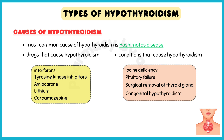The most common cause of hypothyroidism is Hashimoto's disease, an autoimmune condition in which a patient's own antibodies attack the thyroid gland. Drugs such as interferons, tyrosine kinase inhibitors, amiodarone, lithium, and carbamazepine can also cause hypothyroidism. Specific conditions such as iodine deficiency, pituitary failure, surgical removal of the thyroid gland, and congenital hypothyroidism also contribute to hypothyroidism.